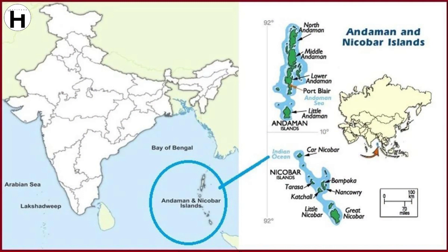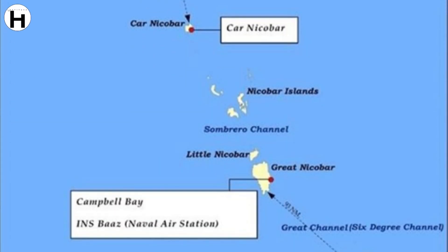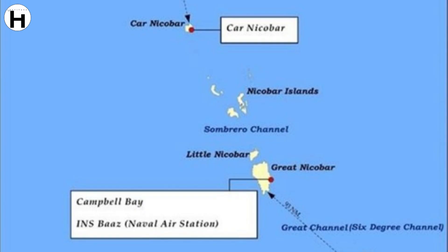The Andaman and Nicobar Islands group includes the Andaman Islands and the Nicobar Islands. The Andaman Islands include the North Andaman, Middle Andaman, South Andaman, and Little Andaman. Port Blair is the capital of the Andaman and Nicobar Islands. The Nicobar Islands include the Car Nicobar, Little Nicobar, and the Great Nicobar.